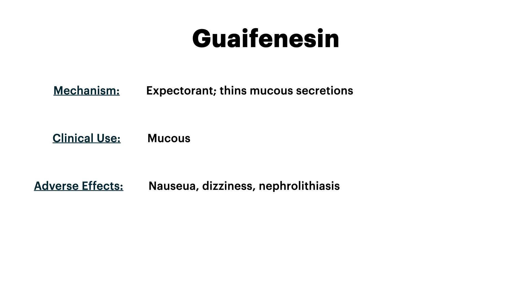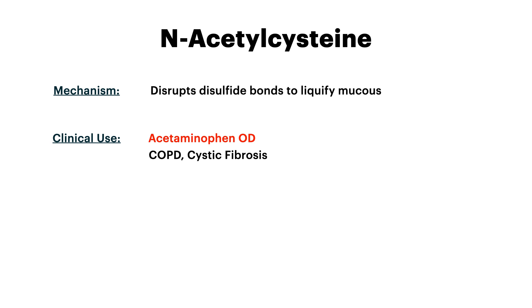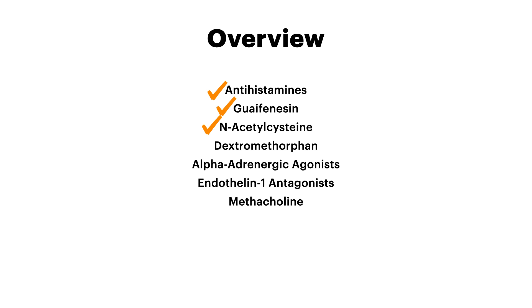N-acetylcysteine is our next medication. This is obviously better known for its use in acetaminophen overdose, but you should know the mechanism here because it can be used in COPD and cystic fibrosis. N-acetylcysteine disrupts disulfide bonds to liquefy mucus. That's why N-acetylcysteine is often discussed in the respiratory section when it comes to studying.